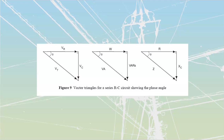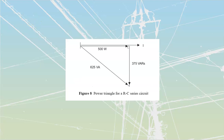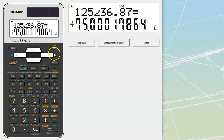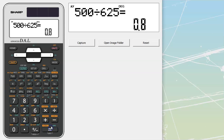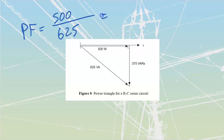Power factor: it's going to be my watts over my VA. We have a power factor for this circuit, and we would call it a leading type of power factor. 500 watts divided by 625 VA brings us out to an 80% power factor. We would say this is an 80% leading power factor. Because it's capacitive, anything capacitive is going to be termed as leading. Anything inductive is going to be termed as lagging. All right, that covers us through series RC - next we're going to combine R, L, and C together.